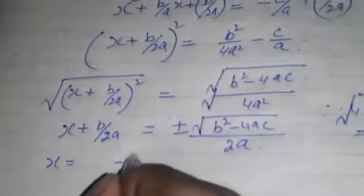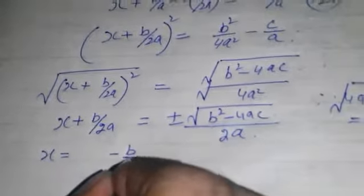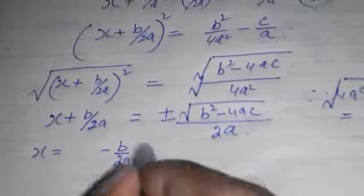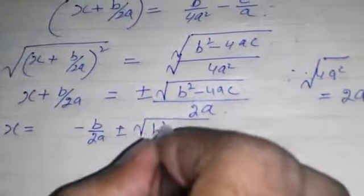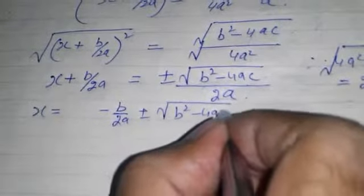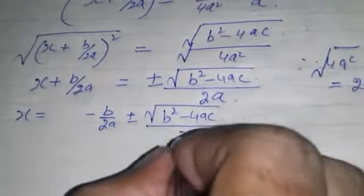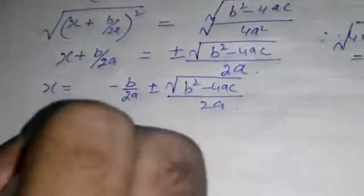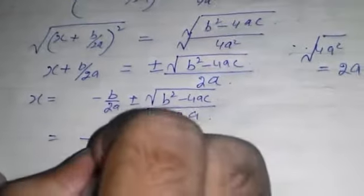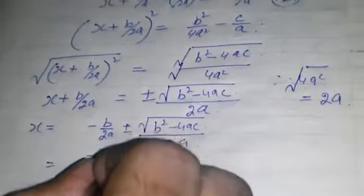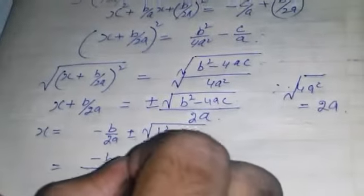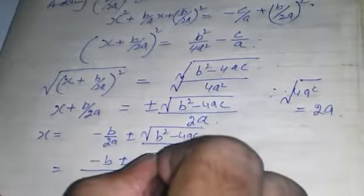Now x = -B/2A ± √(B² - 4AC) / 2A. Take 2A as LCM. We got -B ± √(B² - 4AC).